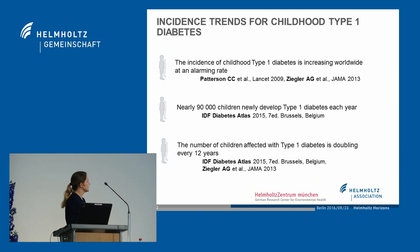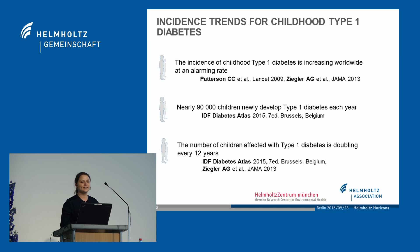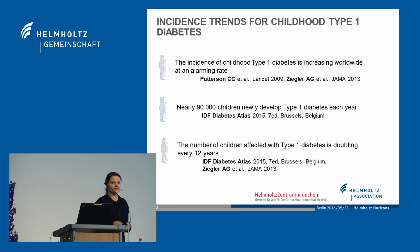Why focus on autoimmune type 1 diabetes? The incidence of childhood type 1 diabetes is rising dramatically, especially in young children. Nearly 90,000 children newly develop type 1 diabetes each year, and the number of children affected is doubling every 12 years. So how can we halt this increasing incidence?